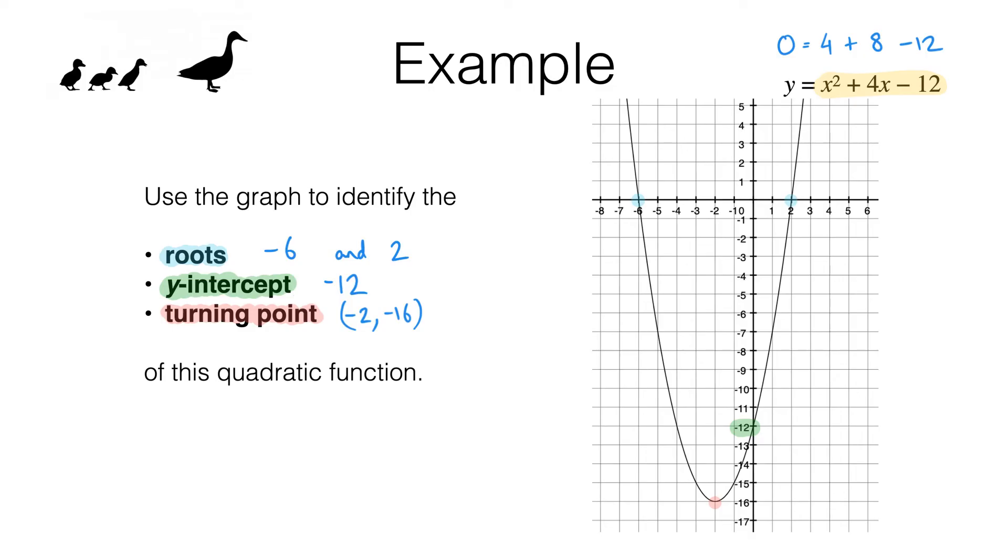Remember, when you substitute a root into a function you get 0. Also notice how this fits in with what we understand about plotting graphs. Remember this is the graph of y equals x squared plus 4x minus 12. And when we substitute 2 into here we get a y value of 0. So that tells us that 2, 0 is a point on the curve. When x is 2, y is 0.